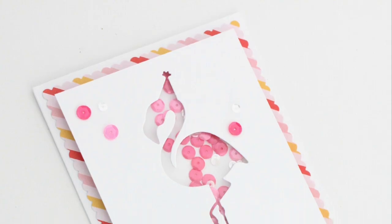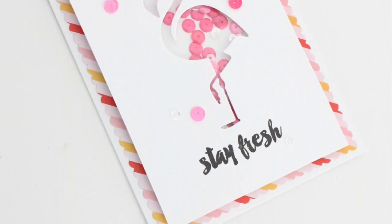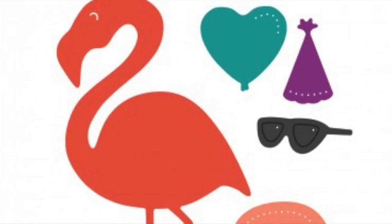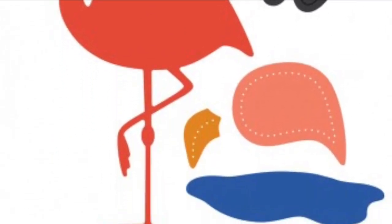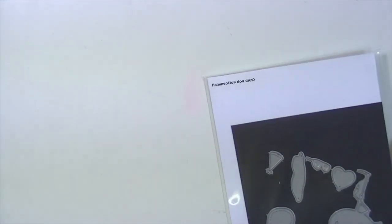So this was the first one that I made using a very girly color palette and I'm going to make a second one here on video using a more masculine color palette. This is the set of dies I'm going to use today. I'm just going to use the flamingo and the little party hat.